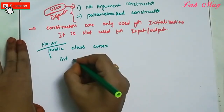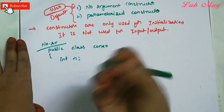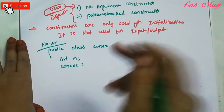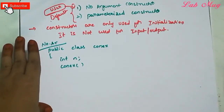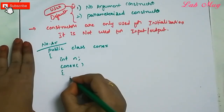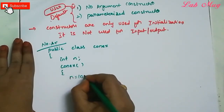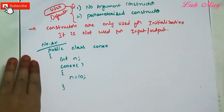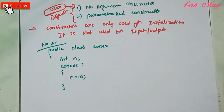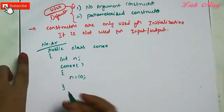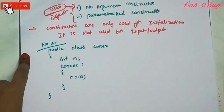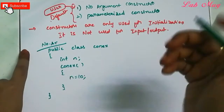We declare one class variable: int n. Then we define a constructor — a method with the same name as the class — that is called a constructor. Inside the constructor: n equal to 10. So when the constructor is accessed, the value 10 is assigned to the variable n.